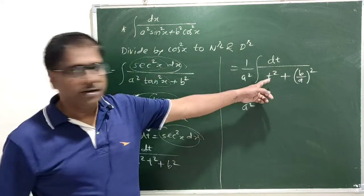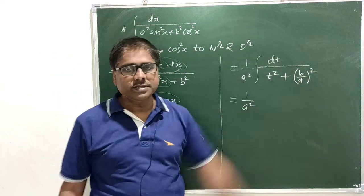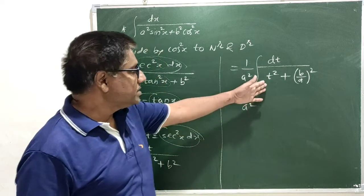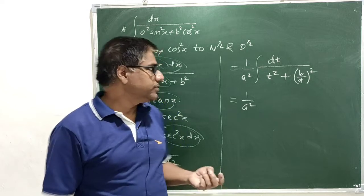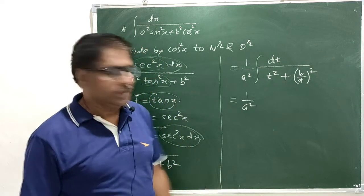Now, this problem is converted into standard format that is 1 upon x square plus a square. Here, x is replaced by t because of substitution. The formula for 1 upon x square plus a square is 1 by a tan inverse x by a.